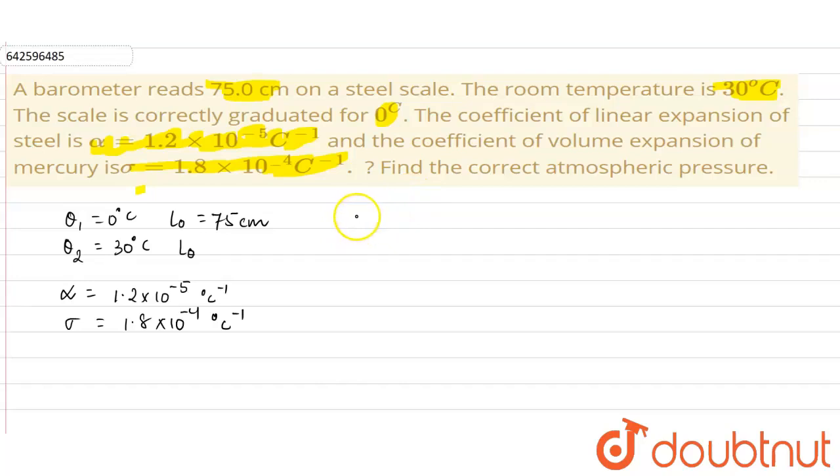So from the concept of thermal expansion as we know, the true value of the scale or true scale value will be equals to the scale reading into 1 plus alpha delta theta.